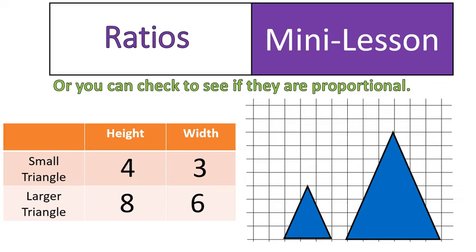4 over 8 and 3 over 6. Or you can notice that if I multiply 4 and 3 times the same number, our constant, they would give you 8 and 6. 4 times 2 is 8. 3 times 2 is 6. So basically the larger triangle is twice as big, or the sides and the height are twice as much. So you can see that they are proportional.